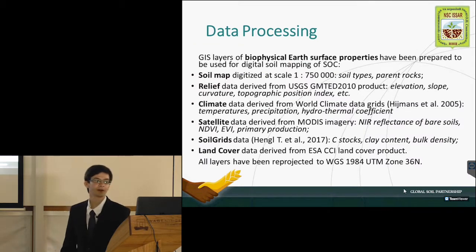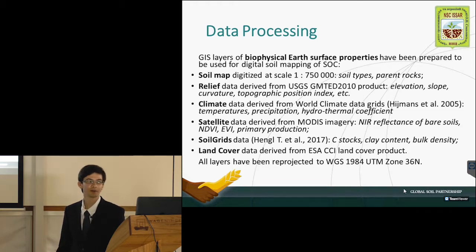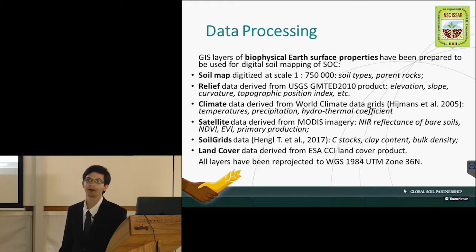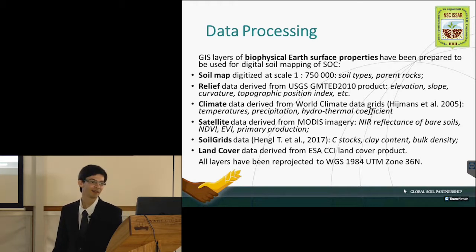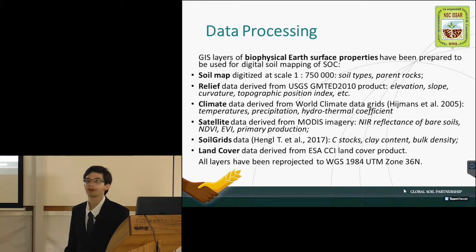For the digital soil mapping, GIS layers of biophysical Earth's surface properties have been prepared both by NSC ISAR and by ISRIC. These layers included soil types, parent rocks, elevation data, climate data, satellite data, and land cover data. Layers were also prepared at 250 meters resolution.